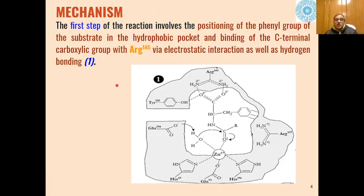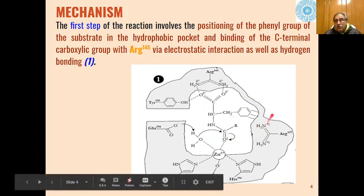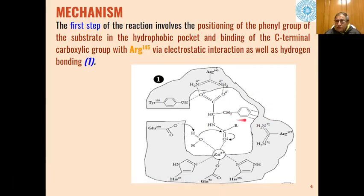In the first step of the reaction, positioning of the phenyl group of the substrate in the hydrophobic pocket of the enzyme will take place. Then binding of the C-terminal carboxylic acid will take place with arginine 145 through electrostatic interaction as well as through hydrogen bonding. Tyrosine will also have hydrogen bonding with the C-terminal carboxylic group of the molecule.